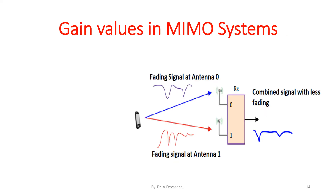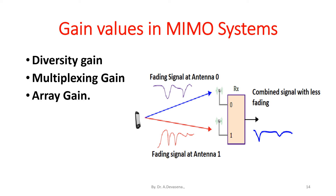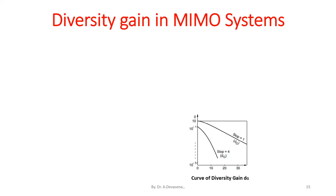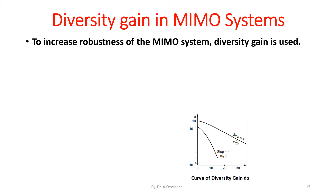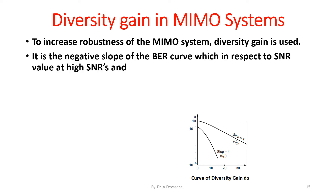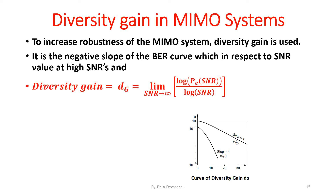Gain values in MIMO systems are: diversity gain, multiplexing gain, and array gain. To increase robustness of the MIMO system, diversity gain is used. It is the negative slope of the BER curve with respect to the SNR value at high SNRs. Diversity gain is defined as: d_G = limit as SNR tends to infinity of E[ log(P_e(SNR)) / log(SNR) ].